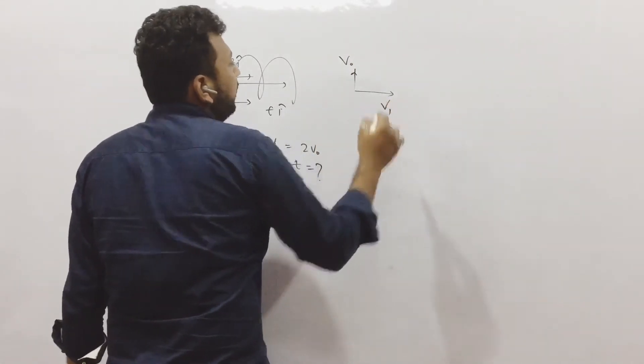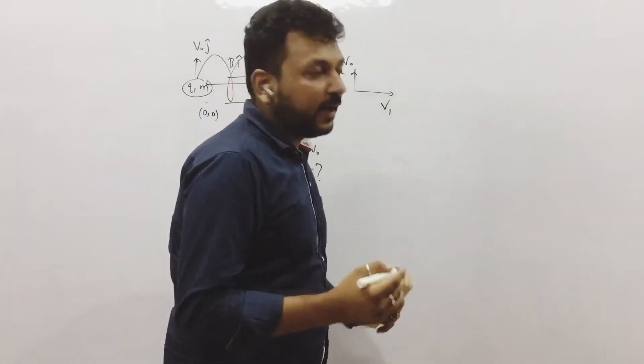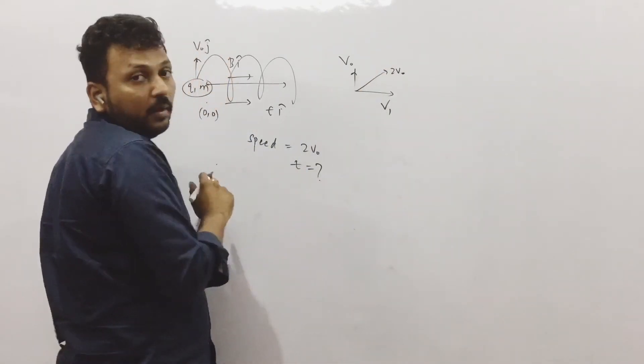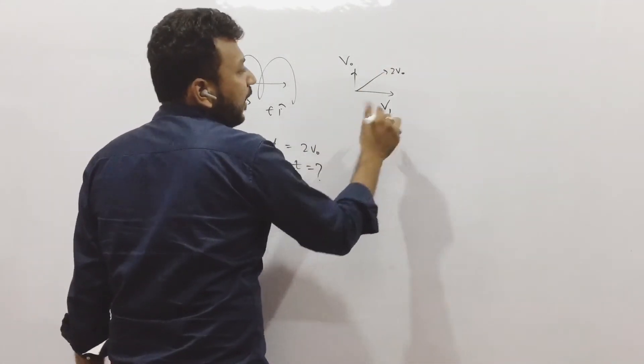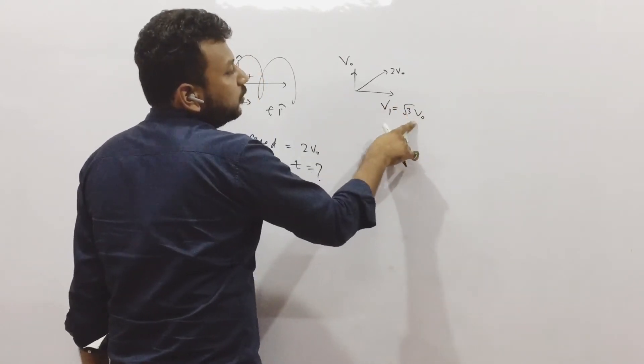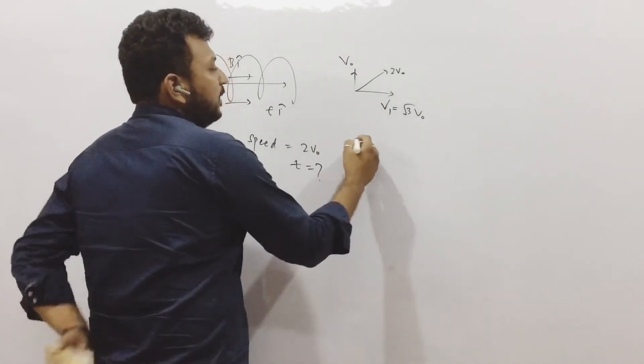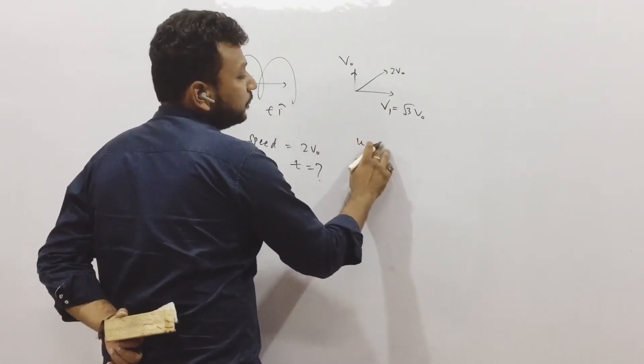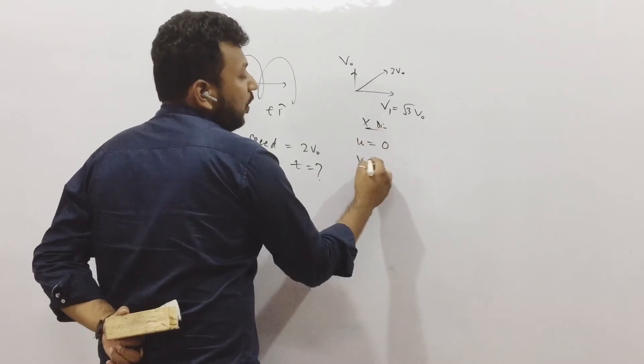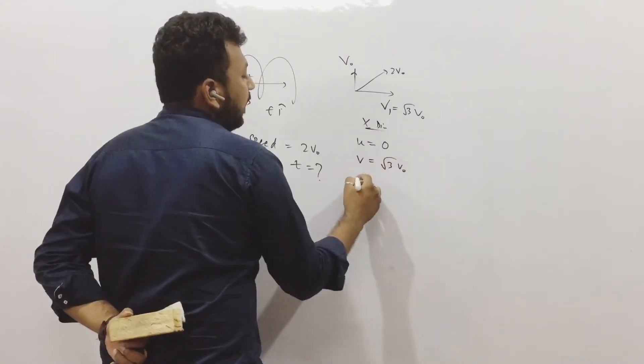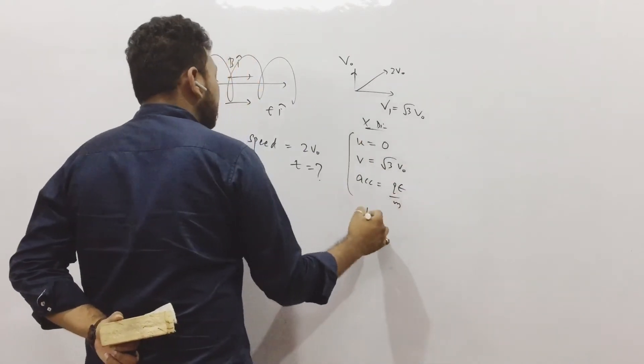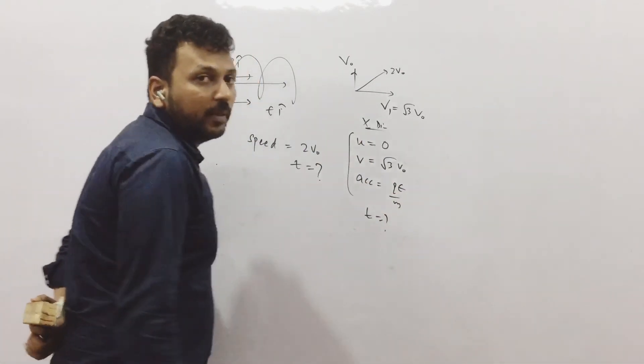Suppose we have v1 as the velocity in the x direction, the resultant of both will be 2v0. From here we can find this as root 3 v0, because this square plus this square equals 2v0 squared. That means in the x direction, initial velocity is 0, final velocity is root 3 v0, and the acceleration is q into E upon mass. We have three things, we can find the time.